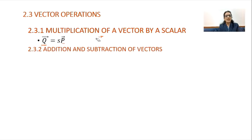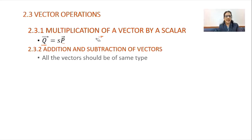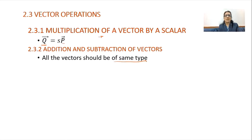Next is the addition and subtraction of vectors. First we will see when we can add or subtract two, three, or more vectors. The first condition for adding or subtracting vectors is that all those vectors should be of the same type — the same physical quantity. A vector of force must be added to another vector of force only; force cannot be added to velocity.